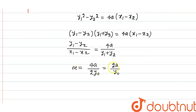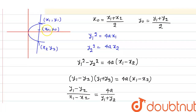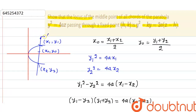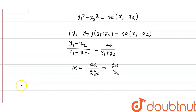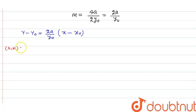Now, since m = 2a / y0, we can write the equation of the chord passing through the midpoint (x0, y0). The chord also passes through the fixed point (h, k). So the equation is y - y0 = (2a / y0)(x - x0). Substituting the fixed point (h, k): k - y0 = (2a / y0)(h - x0).